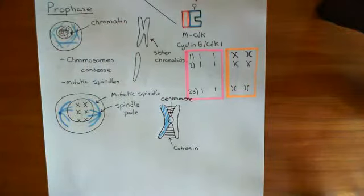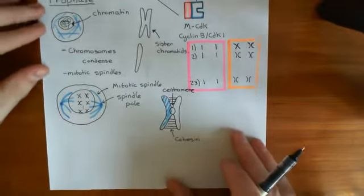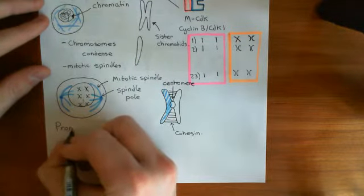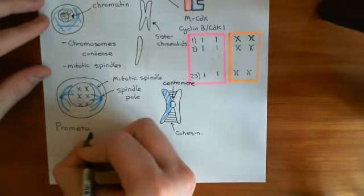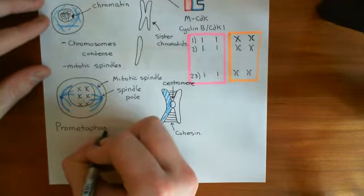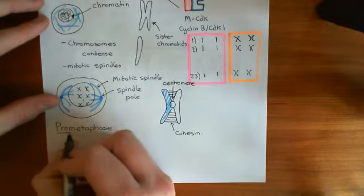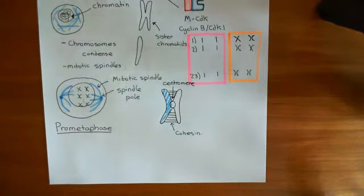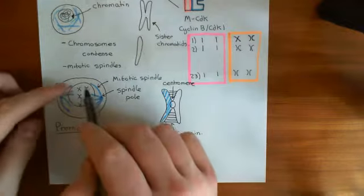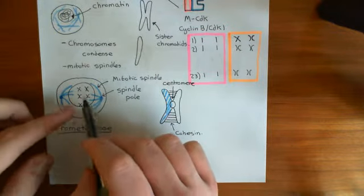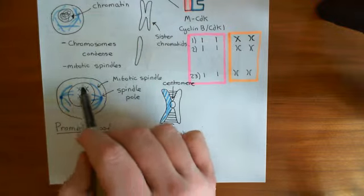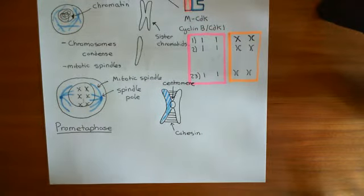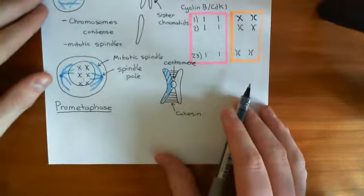The next phase of mitosis is prometaphase. A cell is going to go from prophase to prometaphase. In prometaphase, what's going to happen is that the nuclear envelope is going to disintegrate — it's going to retract. You're going to basically break down the nucleus, and you'll just have these sister chromatids in the cytoplasm of the cell, no longer in the nucleus, because the nuclear envelope has broken down.